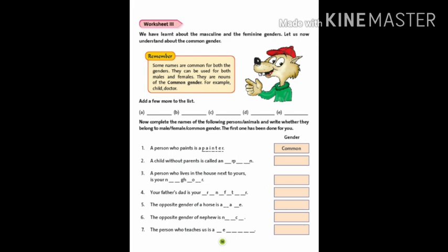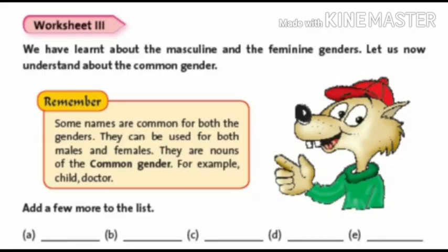Till now we have learnt about the masculine and the feminine genders. Let us now understand about the common gender. Some names are common for both the genders. They can be used for both males and females. They are nouns of the common gender. For example, child, doctor, baby, etc.